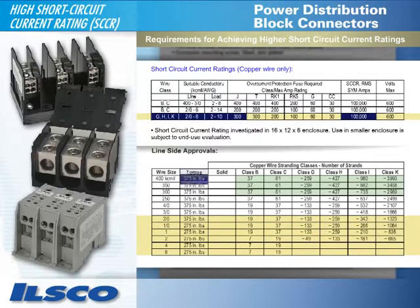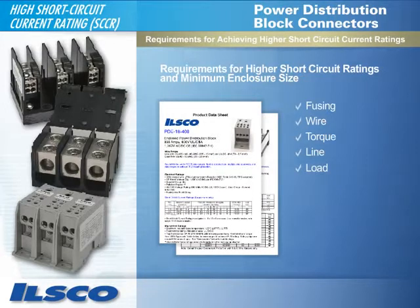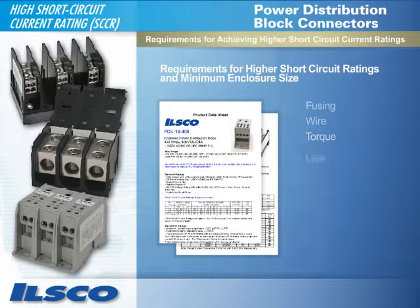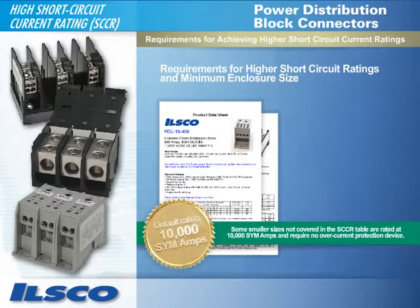Remember, the specified fusing, wire selection, and torque requirements must be followed in conjunction with the proper combination of line and load conductors in order for the block to be rated at 100,000 SIM amps. If the specified fusing, wire selection, and torque requirements in the SCCR table are not used, all power distribution blocks have a default rating of 10,000 SIM amps with the standard wire range. Some of the smaller sizes not covered in the SCCR table do have the 10,000 amp rating, which requires no overcurrent protection device.